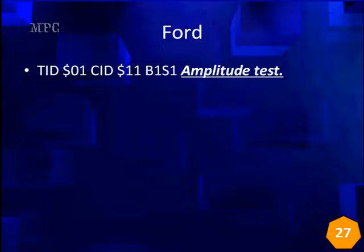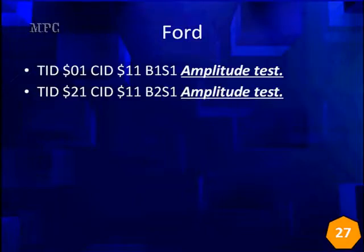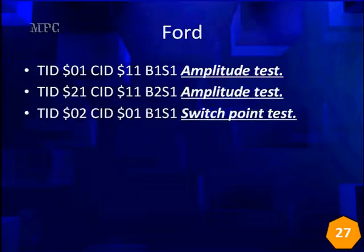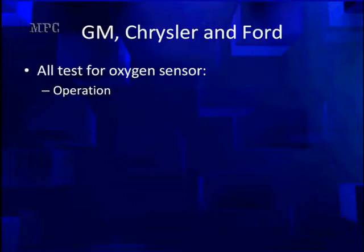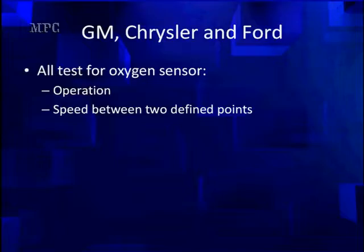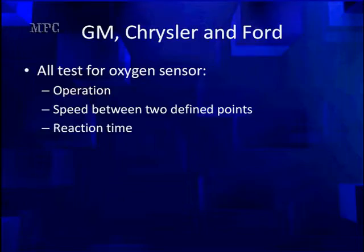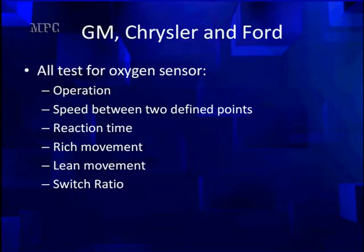We need to know those voltages in order to do the switch ratio of rich to lean and compare them between different sensors — we may be comparing front to rear sensors. Ford's amplitude test is really a response time. It's going to measure the voltage amplitude in a timed switching test, doing it for both the left and the right bank, with switch points for lean and switch points for rich. They're all going to test the operation and the speed between two defined points. They may have slightly different nomenclature — switch time, big slope, half cycle — all of these are measuring the time between two points.